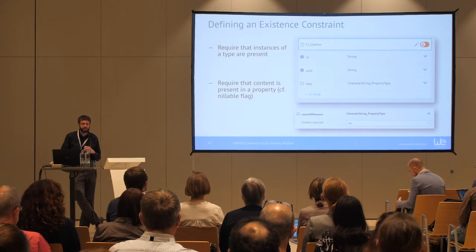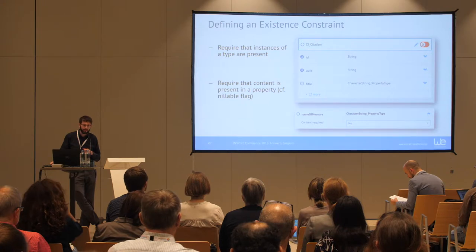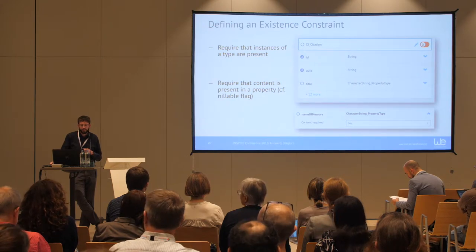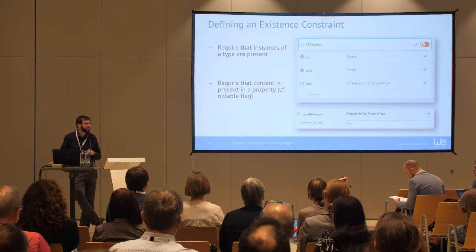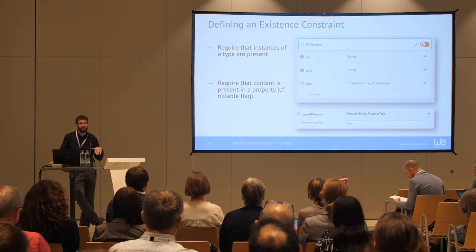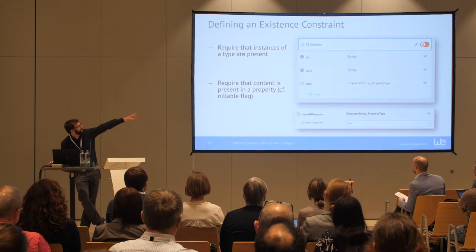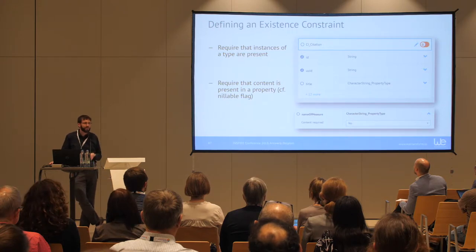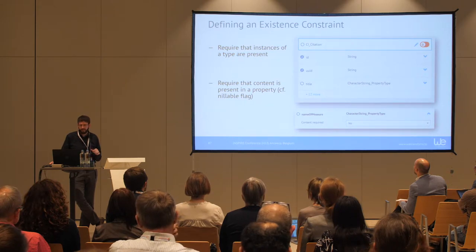One thing we did was define a set of property constraints that exist on two different levels — on the whole type level and on individual properties. For example, something you can't really test in a GML application schema is whether a certain object is present. With a toggle in our tool, you can define that a particular object type must be present in the dataset. If it's not there, the dataset will be invalid.